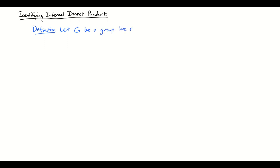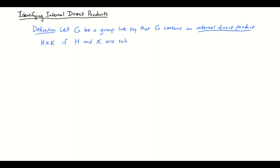So first, a definition. Let G be a group. We will say that G contains an internal direct product H cross K — so H and K are subgroups of G — such that the following three conditions are satisfied. Number one, H and K have to be normal.